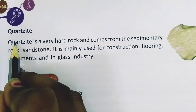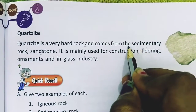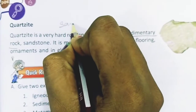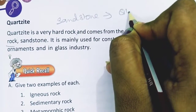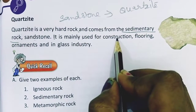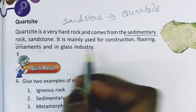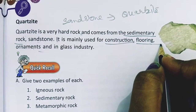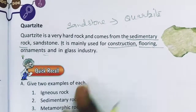Another example is quartzite. It is a very hard rock that comes from the sedimentary rock sandstone. It is mainly used for construction, flooring, ornaments, and in the glass industry.